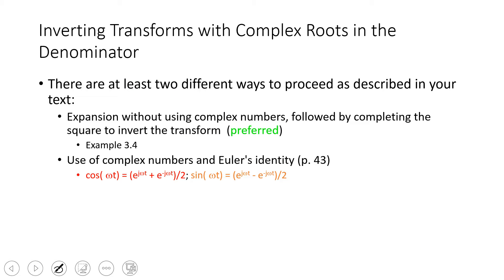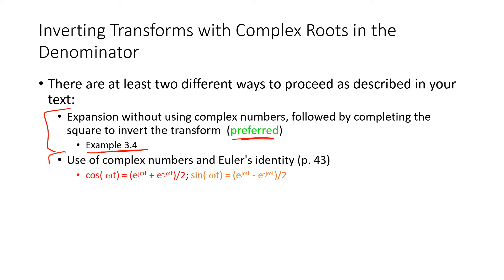For inverting transforms with complex roots in the denominator, there are two methods: you can use a partial fraction expansion without complex numbers followed by completing the square to invert the transform — this is the preferred method, with an example in your textbook. Alternatively, you can use complex numbers and Euler's identity, which is a bit harder but referenced in the Seaborg, Edgar, and Mellichamp book.